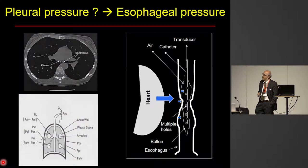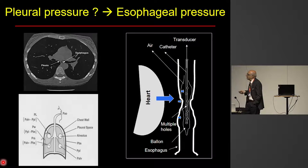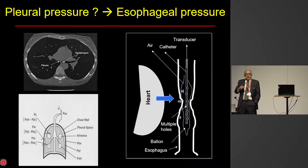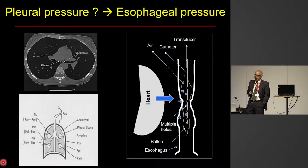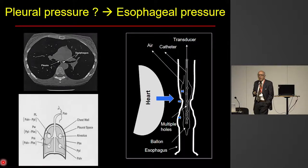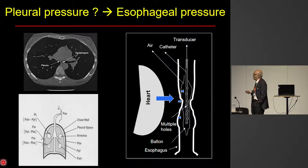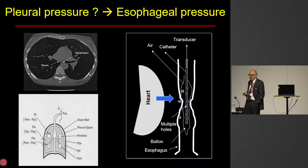First, I will discuss the type of catheter and inflation. We have to insert a catheter in the esophagus, and the pressure that we measure is around below the heart, at least in supine position. The pressure measured with an esophageal balloon depends on the compliance of the balloon and the compliance of the esophagus.